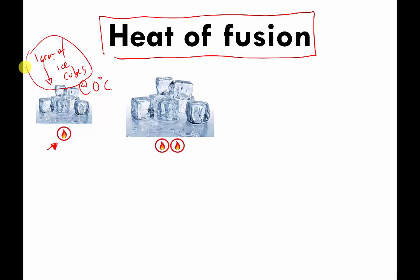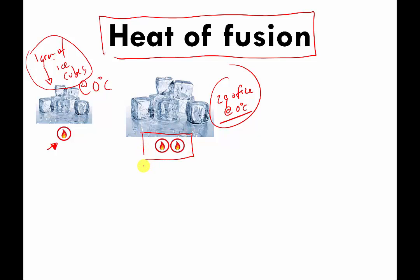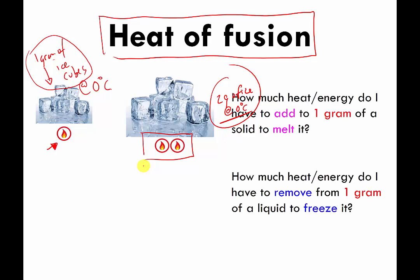If that's true, then if I have two grams of ice at zero degrees Celsius — and it's important that it's at zero degrees Celsius because this has to be done just at the point where the solid material is about to melt — if I have twice as much ice at the same temperature, it's reasonable to assume it's going to take twice as much energy: two candles' worth. This idea that it takes a certain amount of energy to melt a certain amount of material is called heat of fusion.